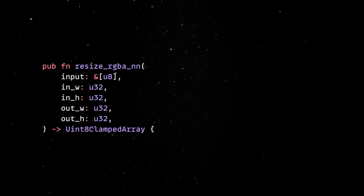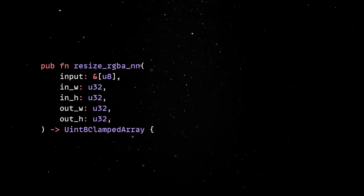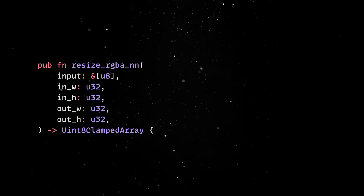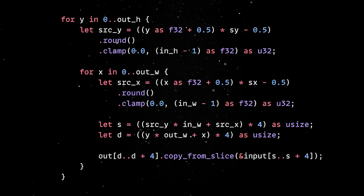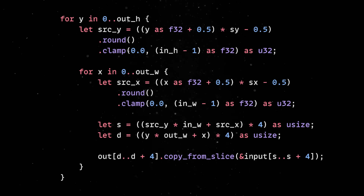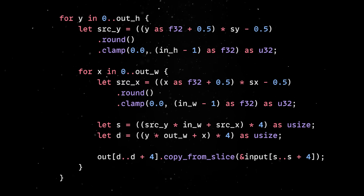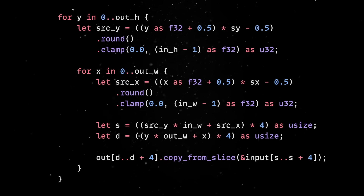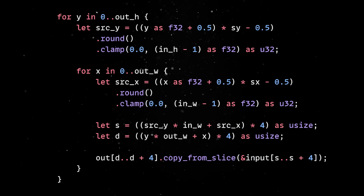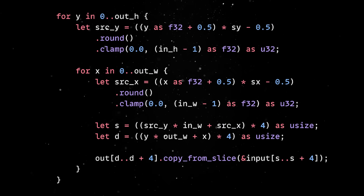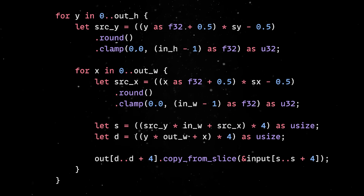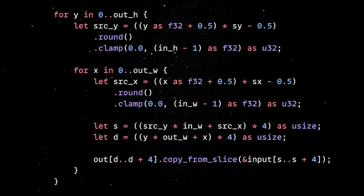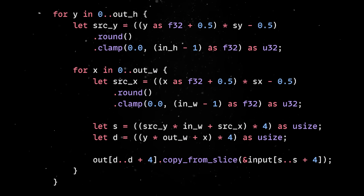We'll implement a tiny nearest-neighbor scaler that operates on RGBA pixels. The method receives an array of pixels from the browser, performs the resize, and returns a new array. The implementation of the algorithm is really straightforward — for each output pixel, we just calculate where it maps back into the source image and copy those RGBA values over. We prefer to do this in Rust and WebAssembly rather than in JavaScript directly because performance matters. A tight pixel loop like this can easily touch millions of array entries for a single image. In JavaScript, that means running through a garbage-collected runtime with type coercions and safety checks on every iteration. In Rust compiled to WebAssembly, the loop is compiled down to efficient low-level instructions that run much closer to native speed.